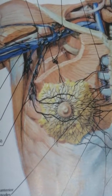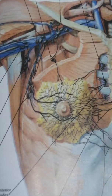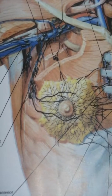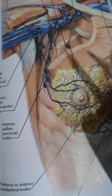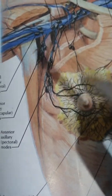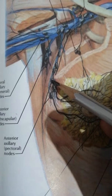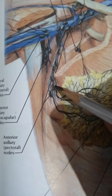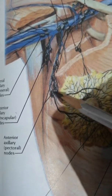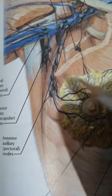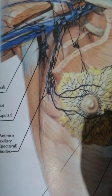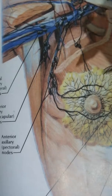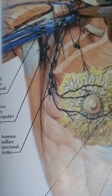Today we will be talking about the groups of axillary lymph nodes. The anterior group, which can be seen right over here, is perhaps the most important. It is also known as the pectoral group. It drains the major part of the breast and also the anterior upper half of the trunk.